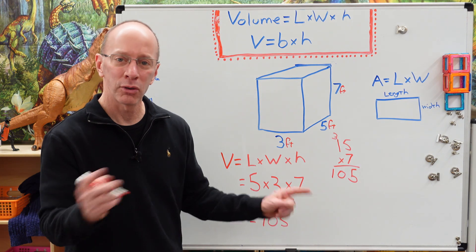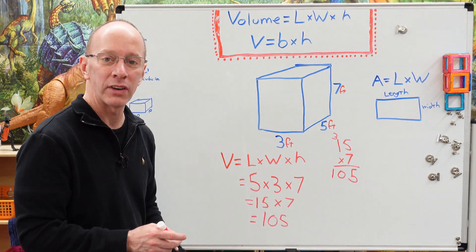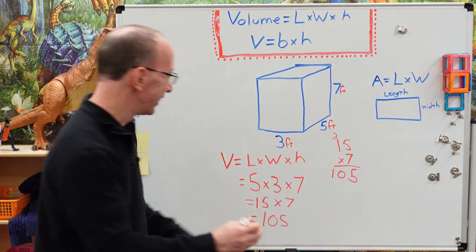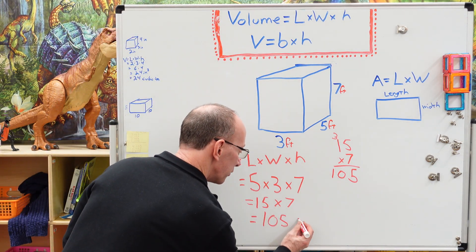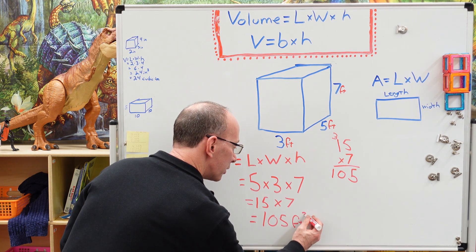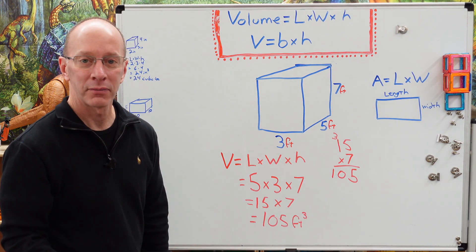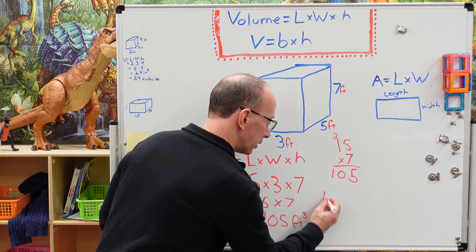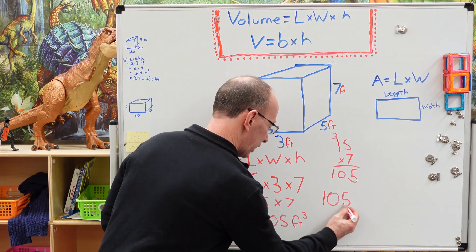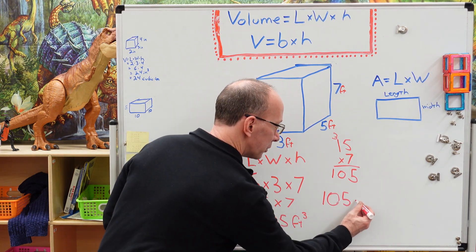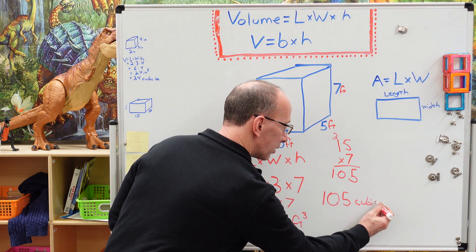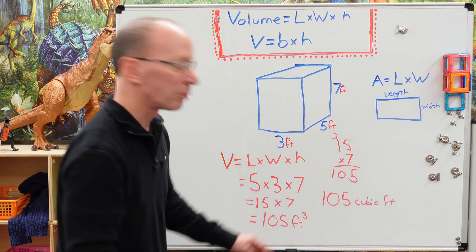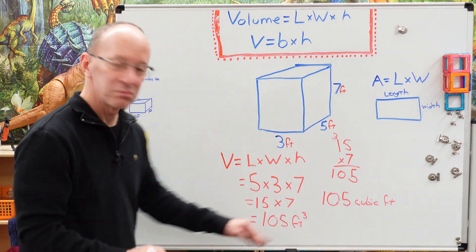So our answer would be 105. And how to write that is we're going to make that 105 cubic feet. I was thinking inches, feet. So we're going to go ahead and put feet right here. And we're going to put the number three up there. Now your teacher might have you write this differently. And so you might have to put 105 and then you can spell it out cubic, and then feet. So I'm not sure which way your teacher wants you to write that. Same thing.